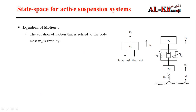Because we have two masses, we will derive the equation of motion for each mass separately. For the first mass, there is a force applied by the actuator in the upward direction, and the spring and damper act to pull the mass body down. Because we have two masses, the spring force is the difference between the position of the first mass minus the position of the second mass. Similarly, the damper force is b (damping coefficient) multiplied by the difference between the velocity of the first mass and the velocity of the wheel mass.